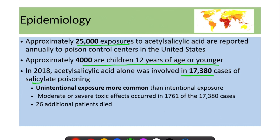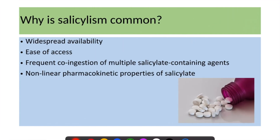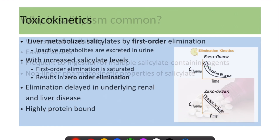Unintentional exposure is more common than intentional exposure. Salicylism is common because salicylates are widely available, easy to obtain, and they are frequently co-ingested with multiple salicylate-containing agents. Moreover, because of the nonlinear pharmacokinetic properties of salicylates, people can develop salicylate toxicity.